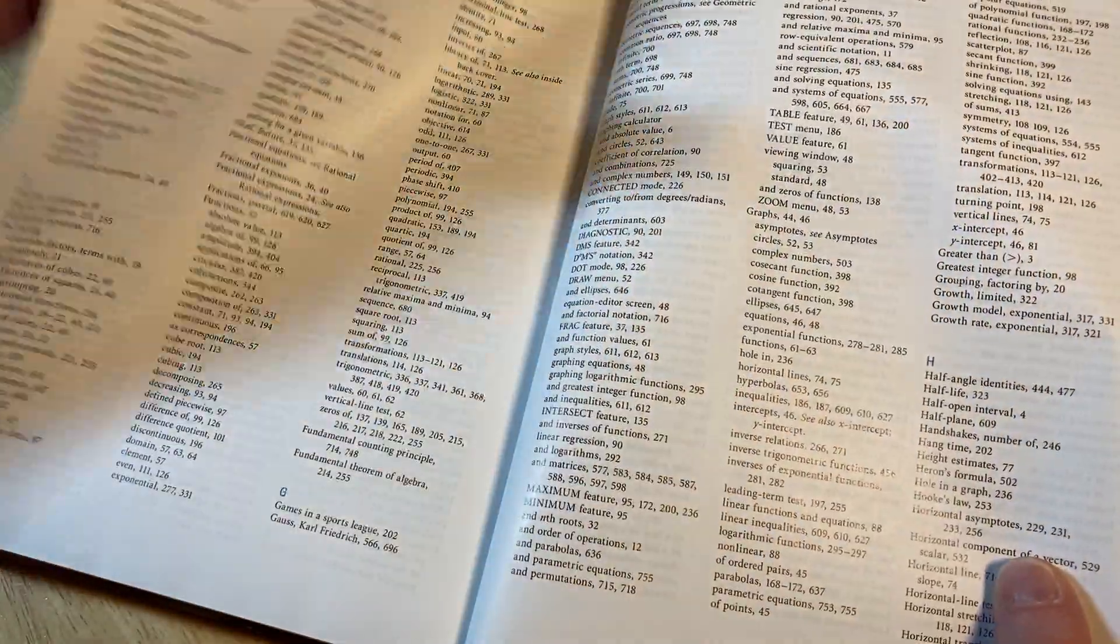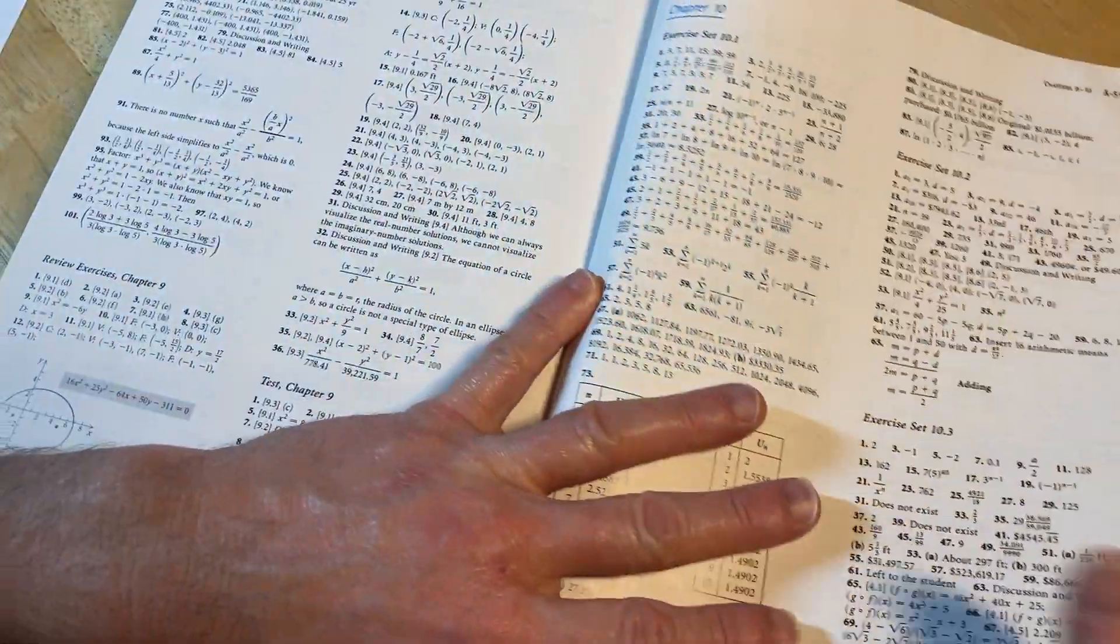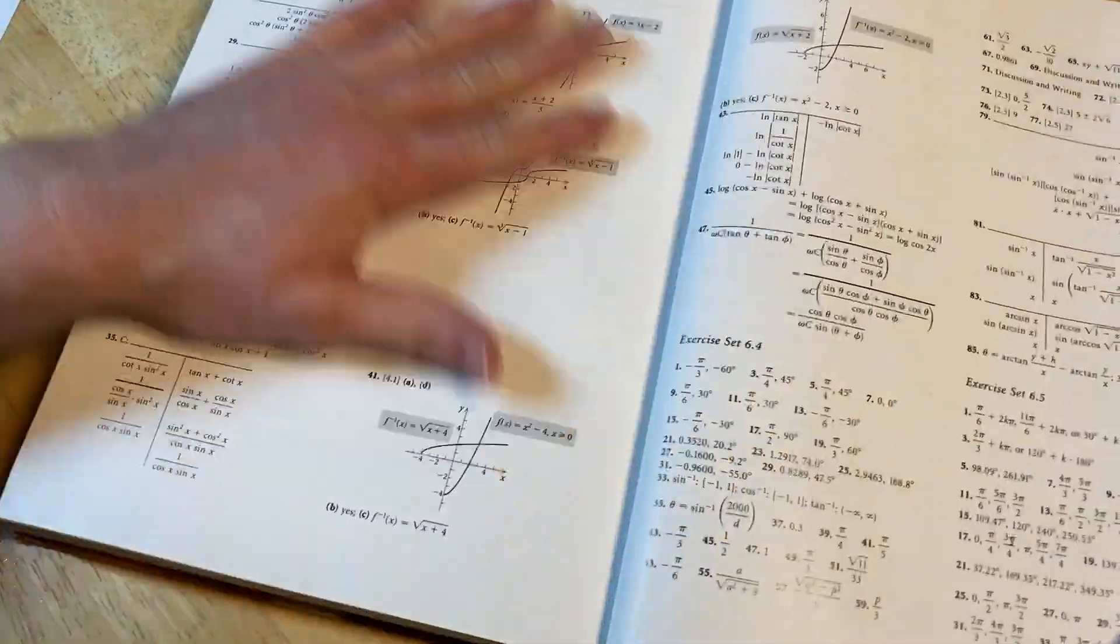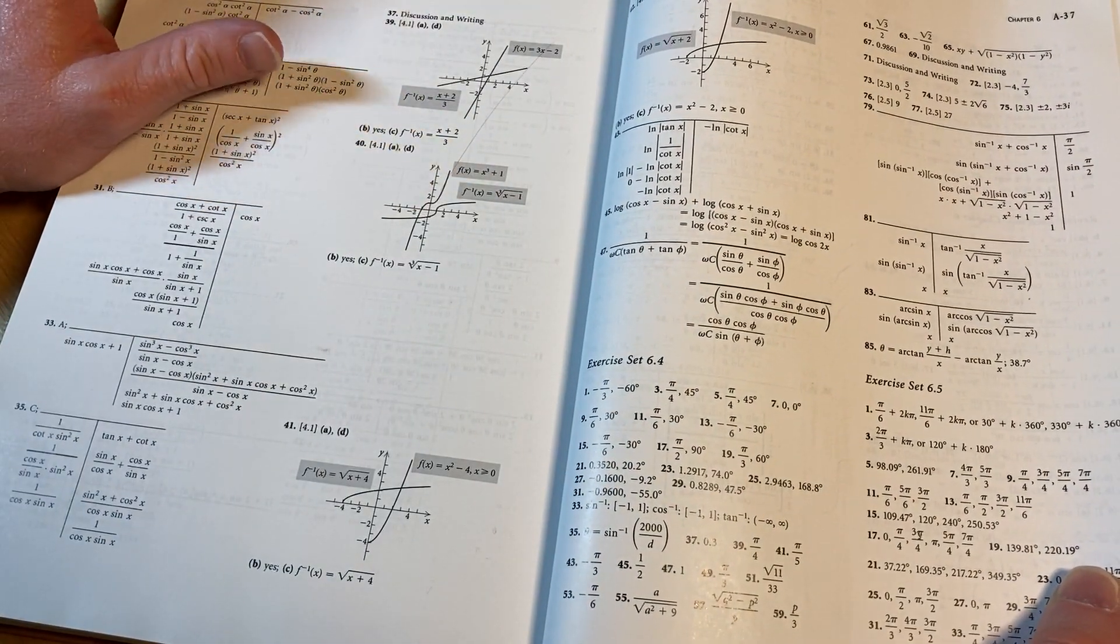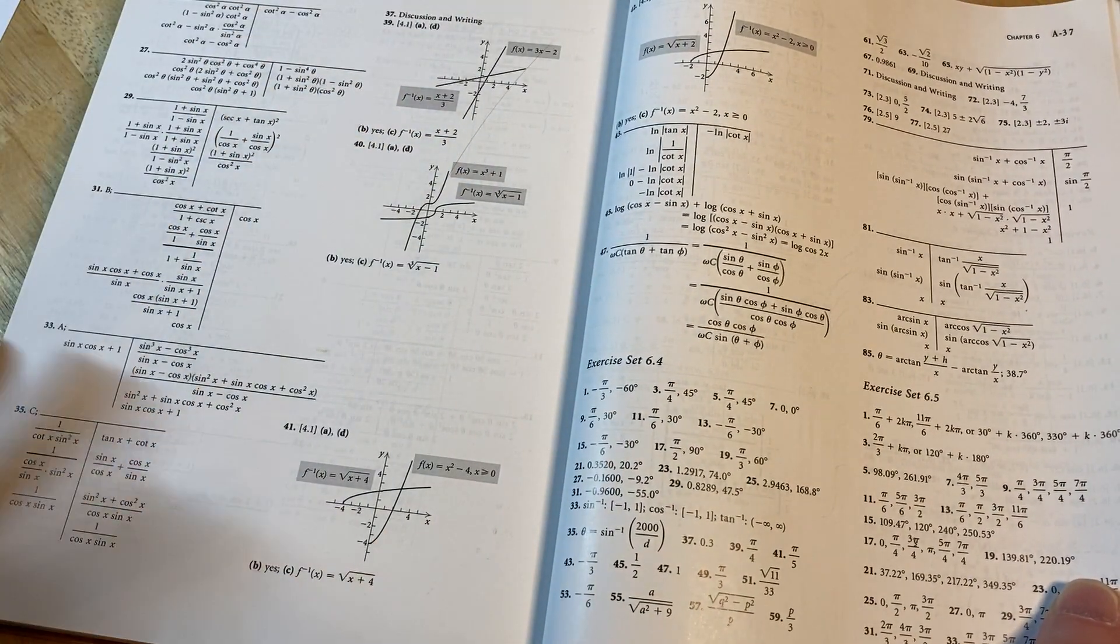So this does have answers, as you can see, to the odd number of problems. So it is a modern textbook. That makes it good for self-study. So you could get this book and you could learn from it.